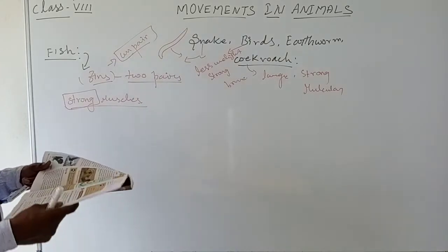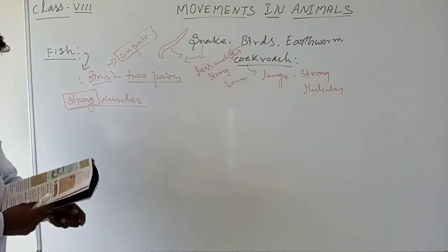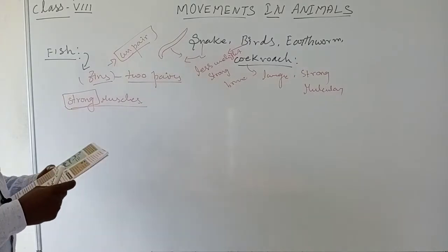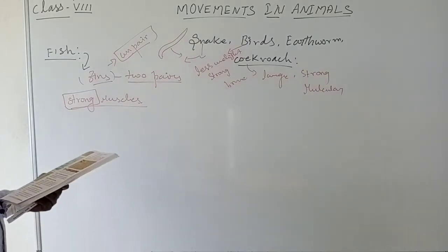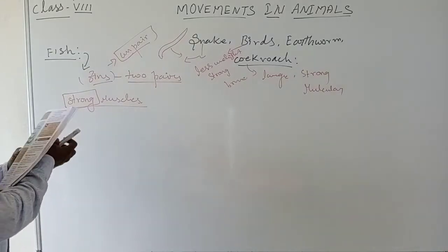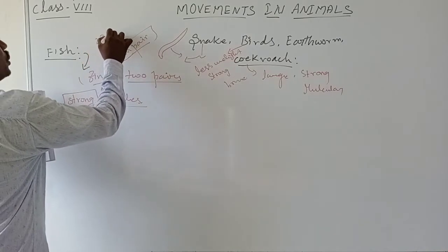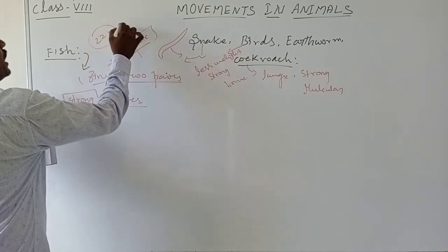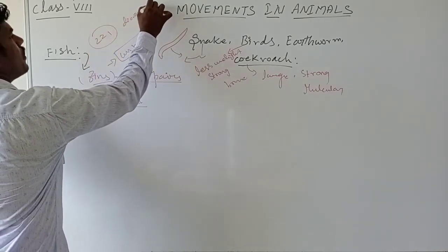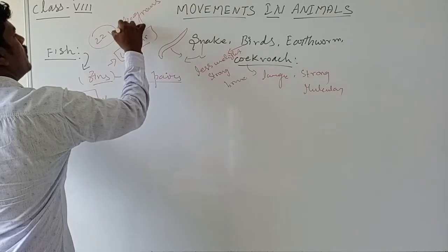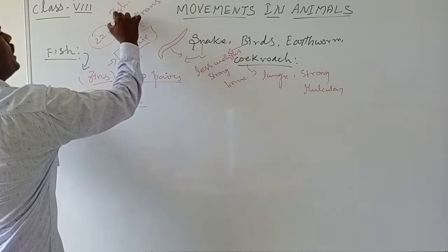If the fish is changing direction, without the tail it is not possible to change direction. If you see the diagram on page number 221, you can see the fish movement diagram showing what direction the animal moves.